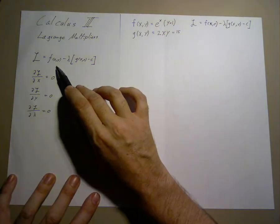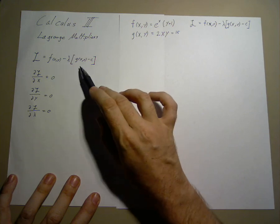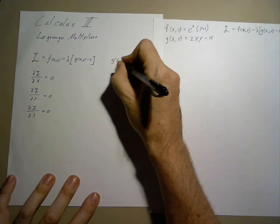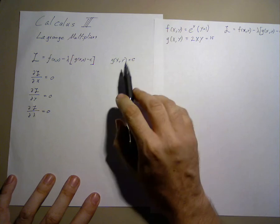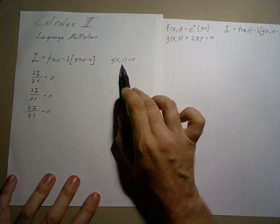In Lagrangian, f is what we want to maximize, where g minus c, g of x, y equals c, is our constraint. This is what constrains our solution.